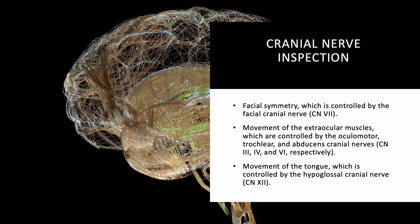Third: movement of the tongue is controlled by the hypoglossal nerve, cranial nerve 12. 'Hypo' means below, and 'glossal' comes from the Latin 'glossa' meaning tongue — so it's the lower part of the tongue. Pushing the tongue forward tests whether cranial nerve 12 is functioning appropriately. Memorize those three: CN 7 for facial symmetry, CN 3/4/6 for extraocular movement, CN 12 for tongue movement. We'll cover all 12 cranial nerves fully for lab.